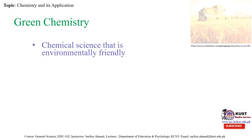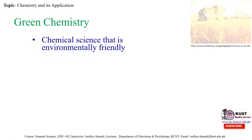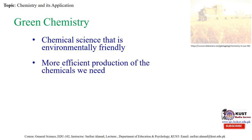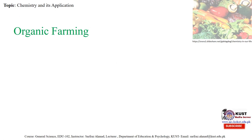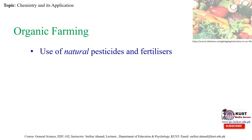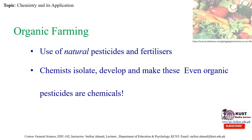Then, what is green chemistry? Chemicals that are friendly — more efficient production of chemicals is needed. 53 percent of people recycle paper and only 23 percent recycle plastics. Cars powered by hydrogen — different sources of energy are used. Organic farming is there, where there is use of natural pesticides and fertilizers. Chemists isolate organic pesticides and chemicals.